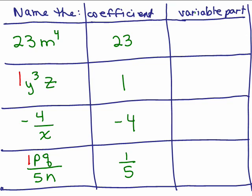Let's do the variable part. For the first one, the variable part is the rest of it, everything that's not the coefficient. So I've got y³z. Now this is tricky. There's an x but it's in the denominator, so the variable part is actually 1 over x, not just x. If the x was in the numerator, it would be x. And for the last one, we've got the 1/5, so the variable part is what's left, pq over n.